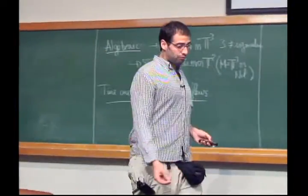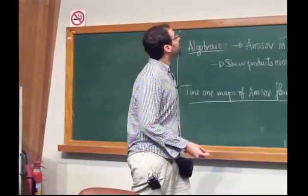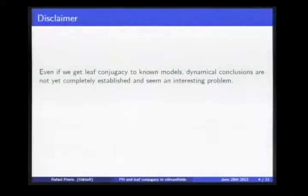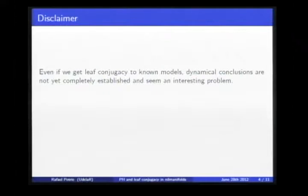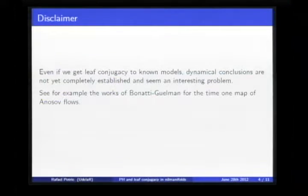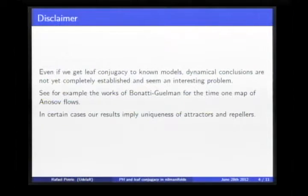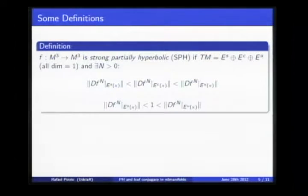As I said, this topological classification alone is not enough — it's kind of an ingredient in the Franks-Manning theory — but even if we get this topological classification, we don't yet have dynamical conclusions. There are some works by Bonatti and Goldman which work in the time-one map of Anosov flows. In some cases we can say something due to our results, but it's not enough in a certain sense.